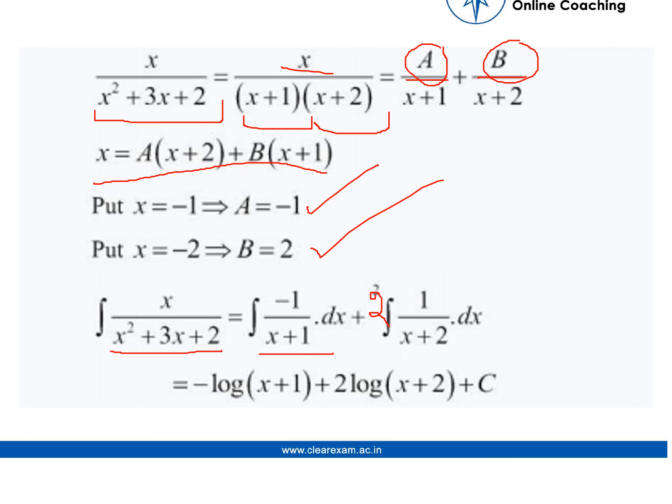So that means that minus 1 upon x plus 1 dx, the integral of that is quite easy, which is we take the minus common and log of x plus 1. But in the other one, we take the 2 common and log of x plus 2 plus C. Thank you.